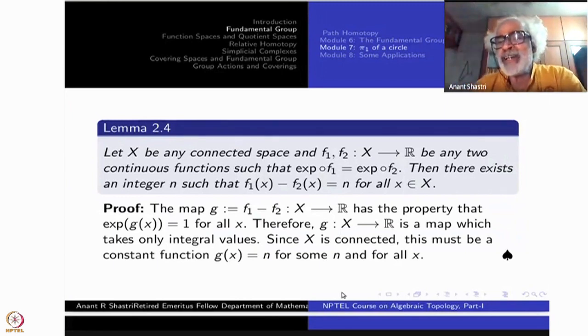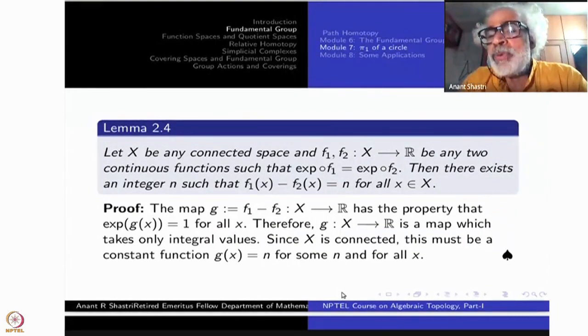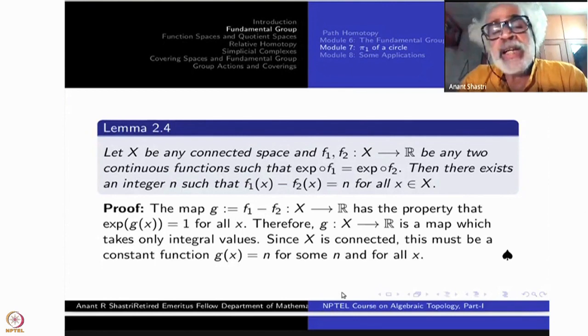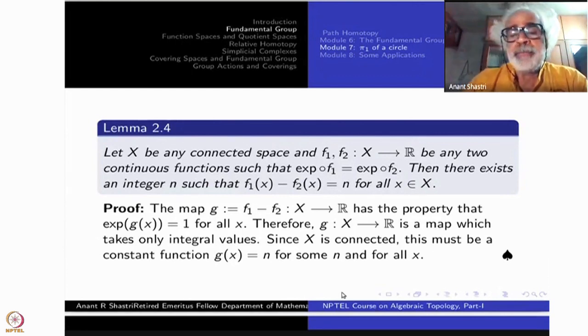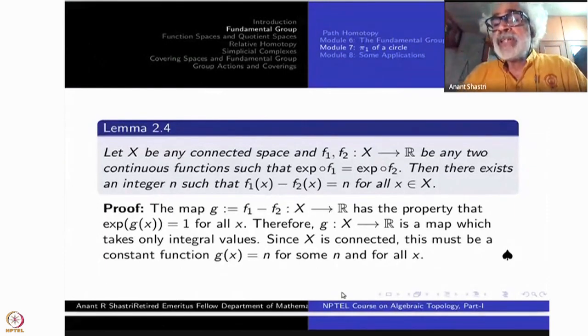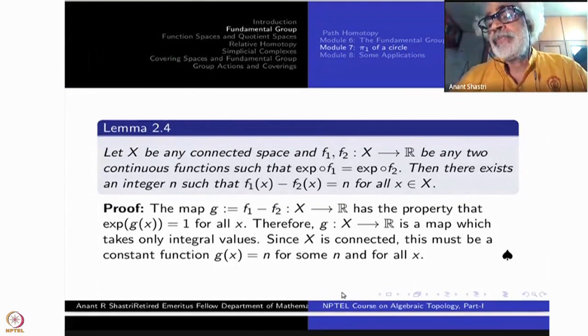This is the first case of that. What this theorem say? What this lemma says is up to an additive constant all the lifts are the same. Take any two lifts, F₁ and F₂. They differ by one single integer, additive integer. F₁ minus F₂ is a constant function n. Is the statement clear? Once the statement is clear the proof will be as easy as it is.